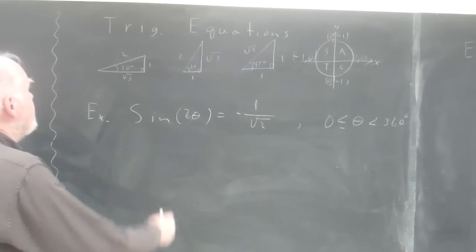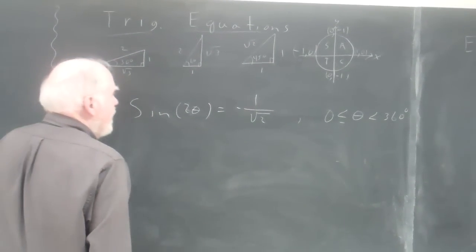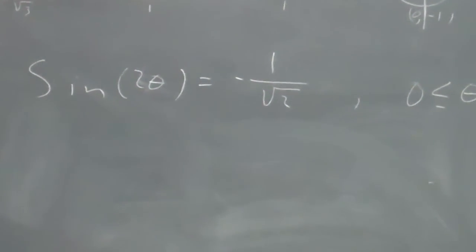We're going to do a little bit more with trig equations here, and we're going to look at the sine of 2 theta equals negative 1 over the square root of 2.